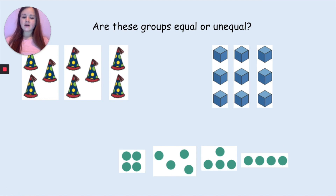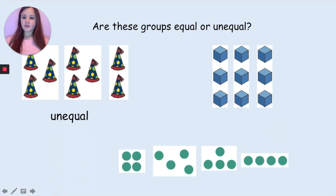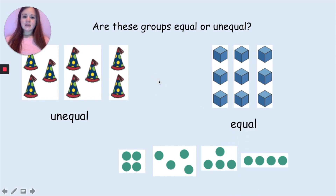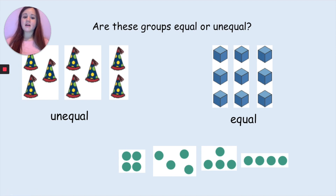The answers: these hats are unequal — we have a group of three, a group of three and a group of two. Well done if you got it correct. Here the groups are equal — we have three cubes, three cubes and three cubes. So three groups of three cubes, they are the same, they are equal. Well done if you got it correct.